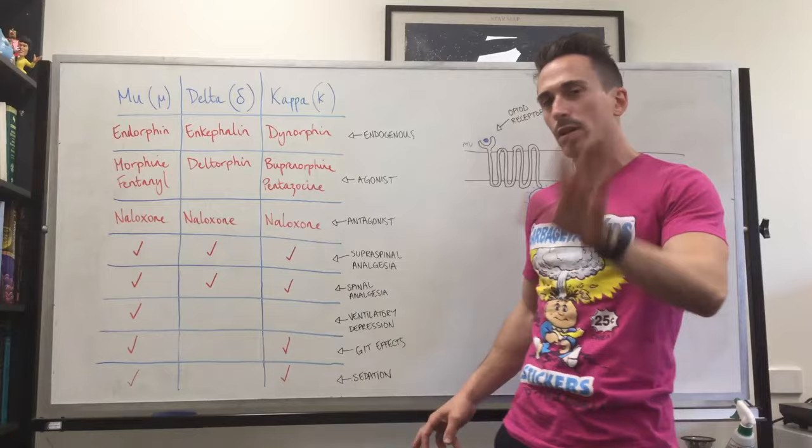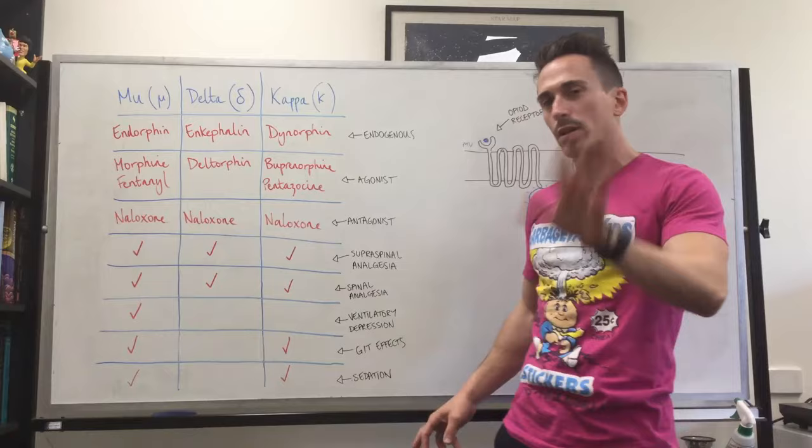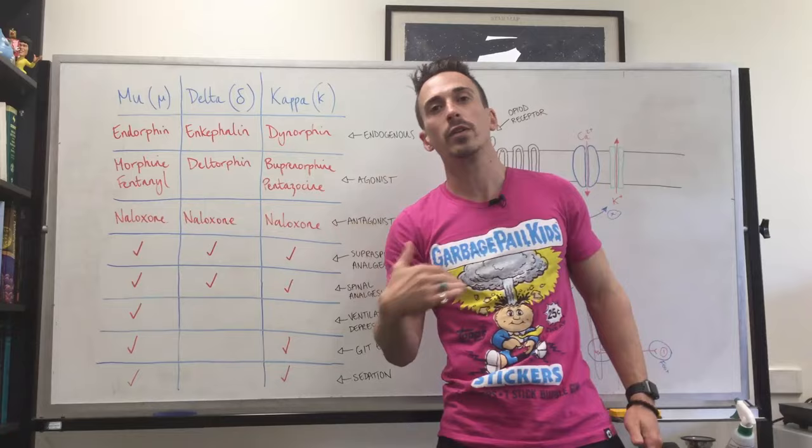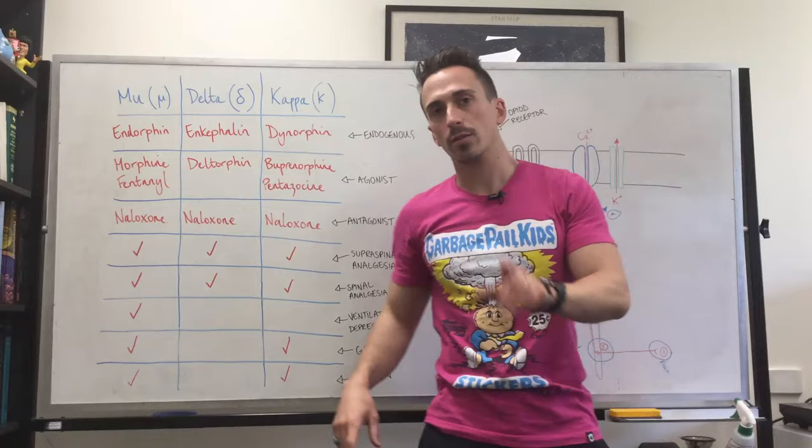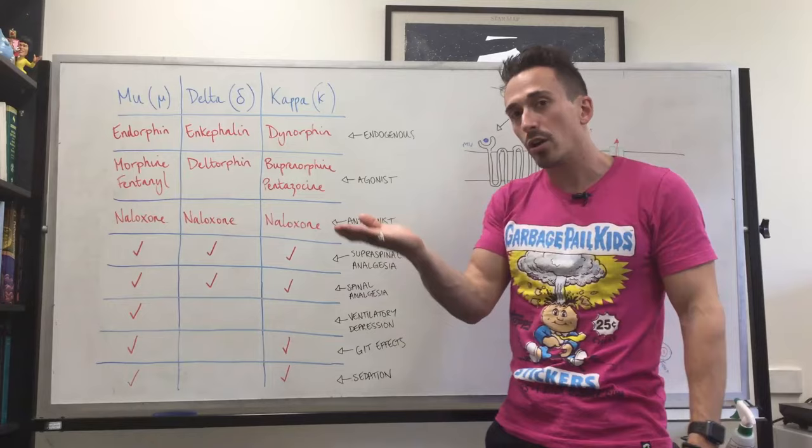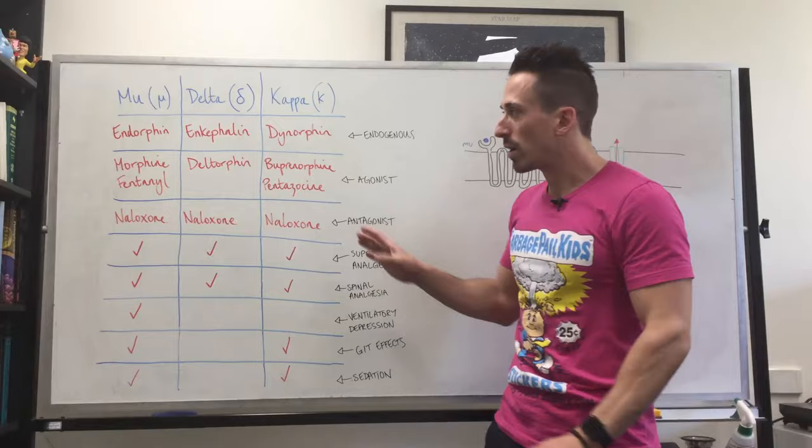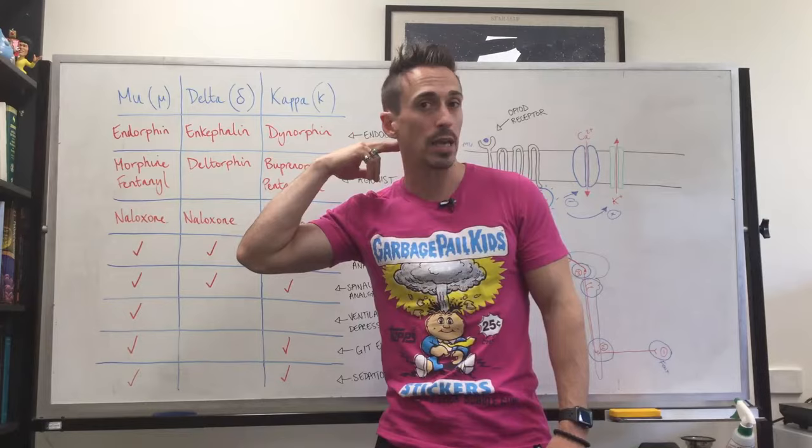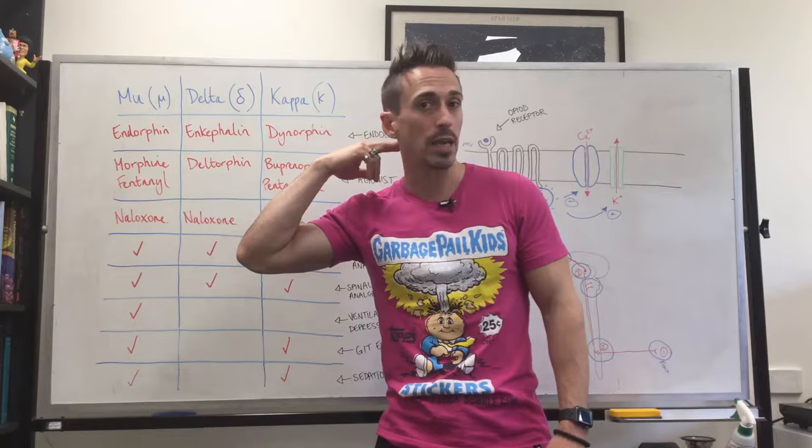Something that's really important clinically is ventilatory depression. This is basically stopping or reducing an individual's ability to breathe. Mu receptors seem to be quite specific for ventilatory depression, which means when you give somebody morphine, you're giving them analgesic effects but also depressing the ventilation. As you increase the dosage, more analgesia and more ventilatory depression. This is one of the main ways an individual taking morphine can die—they simply stop breathing. This happens because it inhibits neurons firing off in the medulla, the breathing center of the brain.